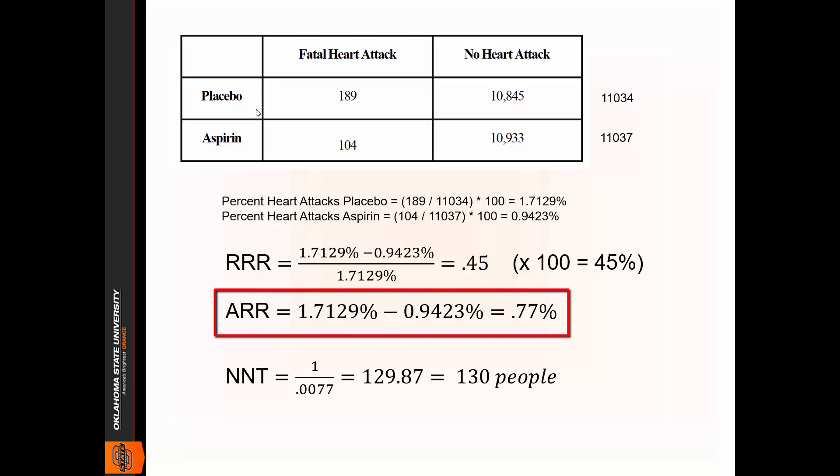Next we have the absolute risk reduction, and that's straightforward. Just take the percentage for the control group, subtract the percentage for the treatment, and there you see it's 0.77 percent. I'm working with percentages here, so that's a percentage, 0.77 percent. I do not have to multiply it by 100, it's good to go.